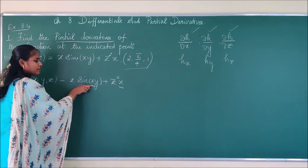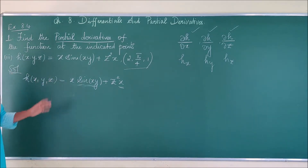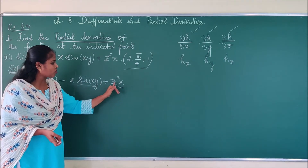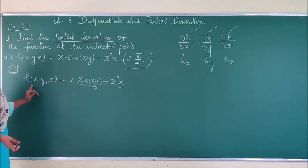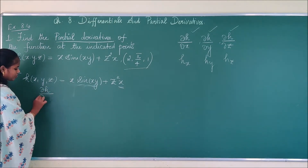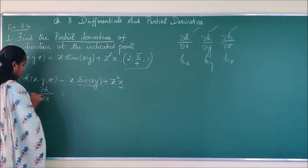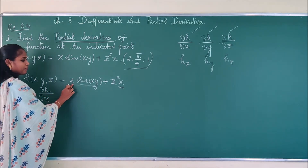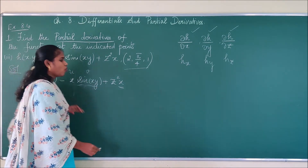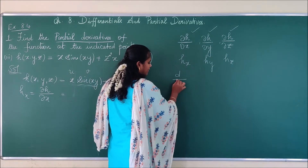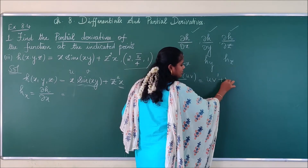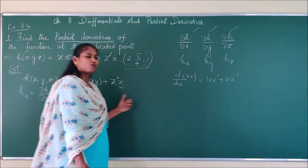Whenever the function is in product, we have to use the product rule for differentiating. Here x is one function and sin(xy) is another function, plus z²x is another term. The product rule — the uv rule — states that d/dx(uv) = u·v' + v·u'. We are going to use the same rule here.